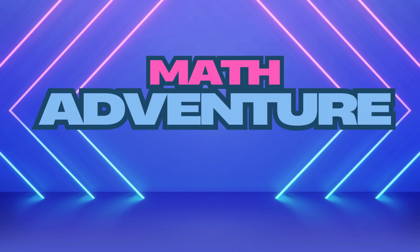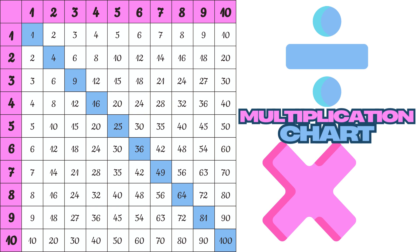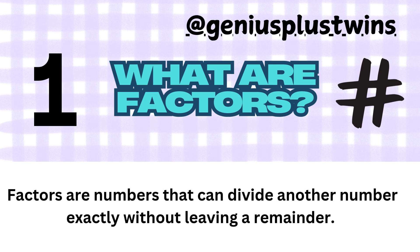Today we're going on a mathematical adventure to discover how numbers work together in families through factors and multiples. We are about to become number detectives. You might be wondering: what exactly are factors? Well, factors are numbers that divide evenly into another number with no remainder. Let's think of them as pairs of numbers that multiply together perfectly.